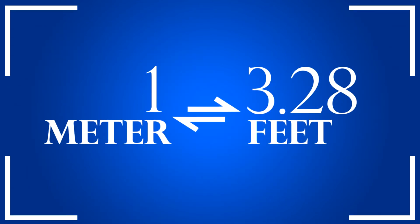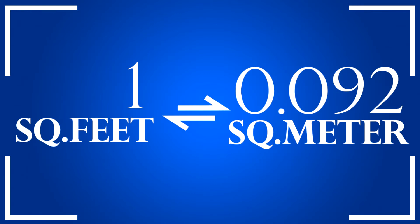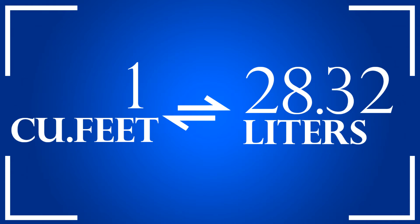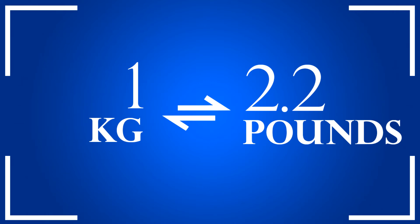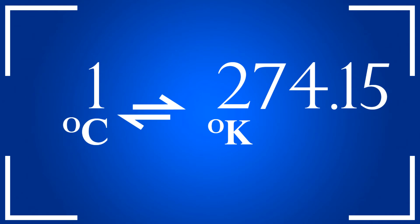Now let's recollect some basics we learned in school. On the screen you can see: 1 meter equals 3.28 feet; 1 foot equals 30.48 centimeters; 1 square foot equals 0.092 square meters; 1 cubic foot equals 28.32 liters; 1 kg equals 2.2 pounds; 1 degree Fahrenheit equals -17.22 centigrade; 1 degree centigrade equals 274.15 Kelvin. All these conversions are very important for HVAC work. We have created a quick reference sheet available in the description — you can download it.